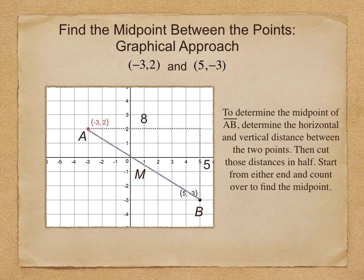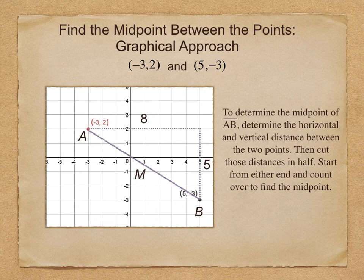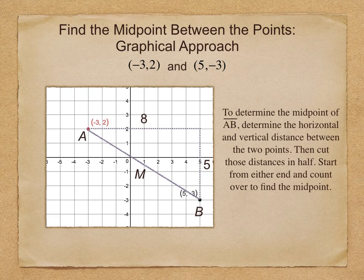Then we'll start from one of the endpoints. I'll start from point A, and we'll count over to find the midpoint. So the horizontal distance is 8. We're going to cut that in half.